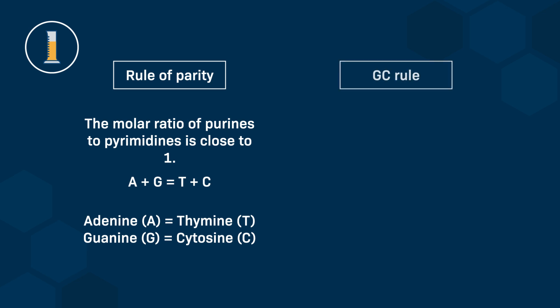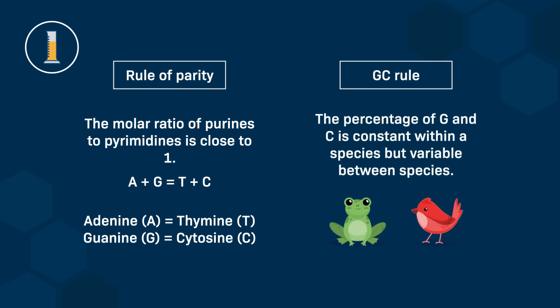Chargaff also coined the GC rule. This rule states that the percentage of G and C is constant within a species, but variable between species. Some species have modified nucleotides, such as the replacement of cytosine with 5-methylcytosine or hydroxymethylcytosine, but the parity rule still applies.